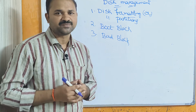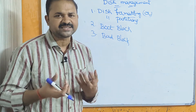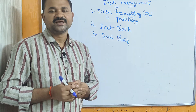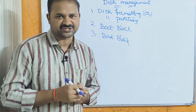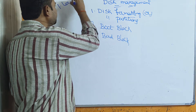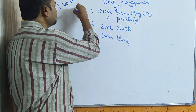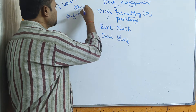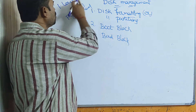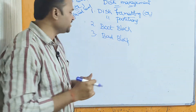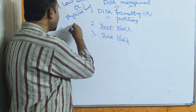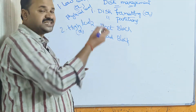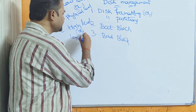Why do we have to partition the disk? Because the size of the hard disk is very large, that's why we partition it. There are two types of partitions: the first is low-level partitioning, also called physical-level partitioning; and the second is high-level partitioning, also called logical-level partitioning.